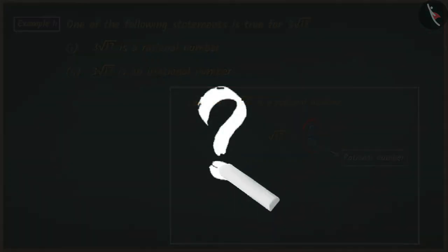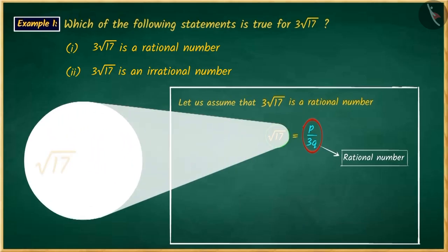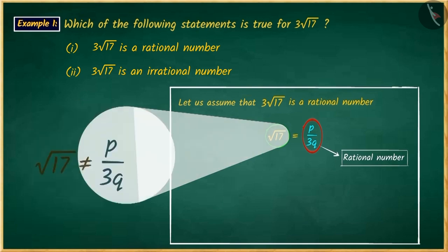Can you write square root of 17 as p upon 3q? No. The square root of 17 cannot be written as p over 3q, that is, it is an irrational number.